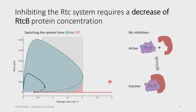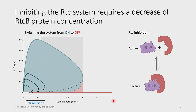What this tells us is that by decreasing the amount of RTCB, we are able to switch the system off. So we introduced RTCB inhibition to the model — assuming an inhibitor comes in and binds to RTCB, making it inactive so it cannot convert tagged ribosomes back to healthy ribosomes. When we introduced this and compared to the original curve, the region of bistability becomes far less. As you increase RTCB inhibition, the amount of active protein decreases, and the region where RTCB is active and the RTC system is on becomes much smaller. So we're far more likely to be in the off state when RTCB is inhibited.